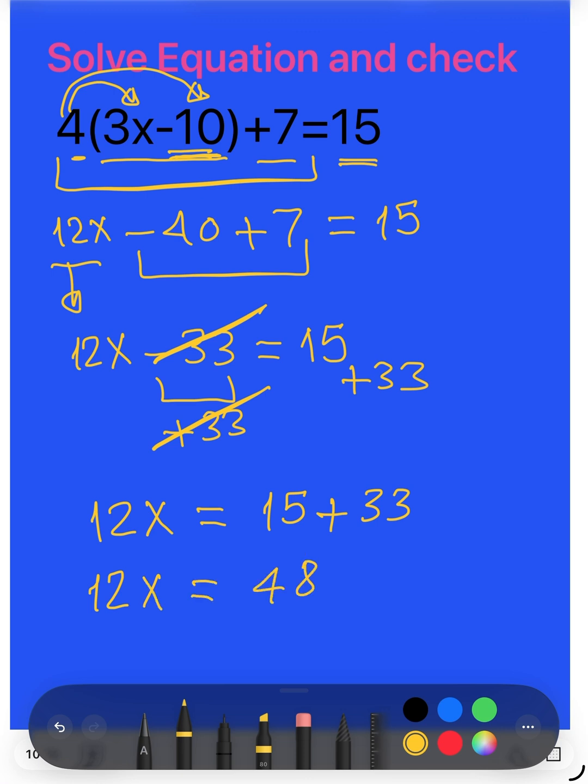Here we have 12 multiplied by x, then I divide by 12, I divide by 12, I cancel. Then we have x equals 48 divided by 12, then we have x equals 4.